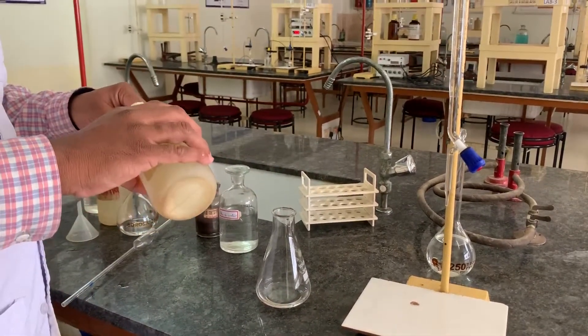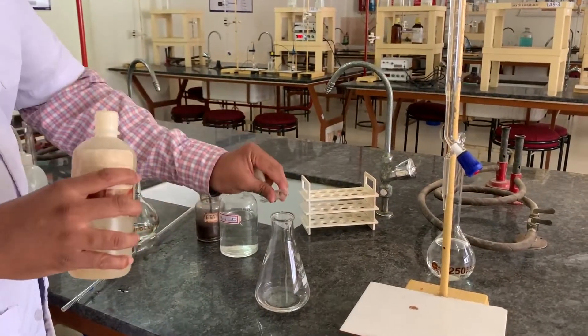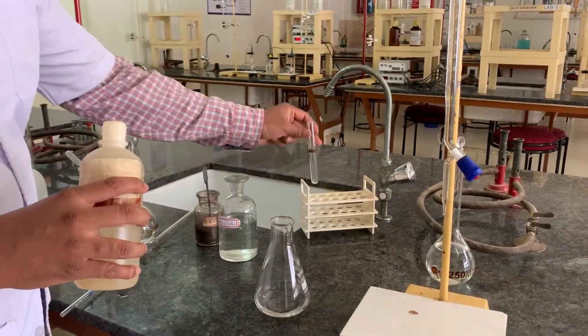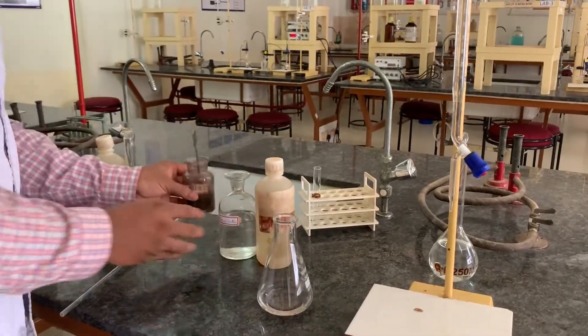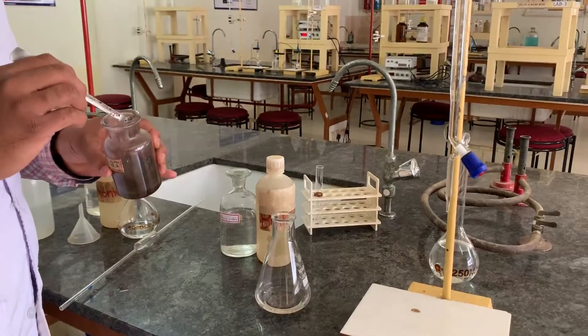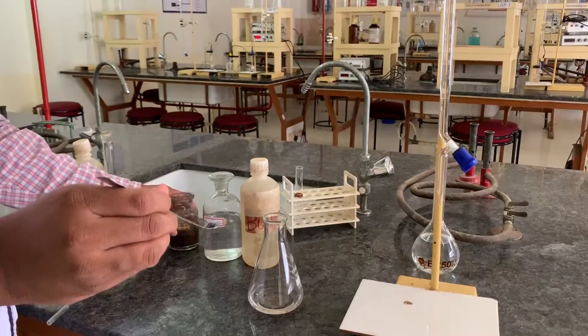That buffer we are going to add, half a test tube, to maintain the pH at 10. After addition of buffer, a pinch of eriochrome black T indicator is added. A pinch of indicator is added.